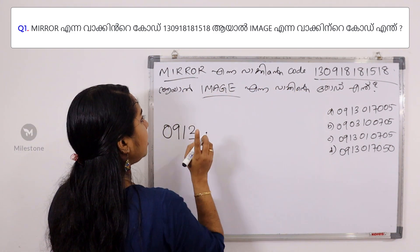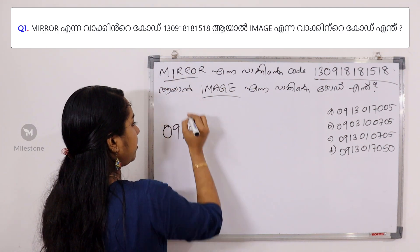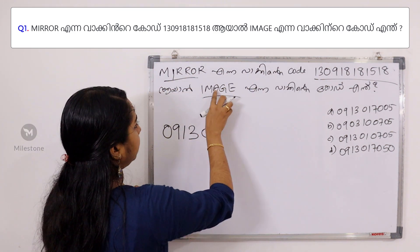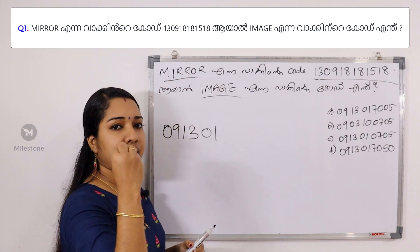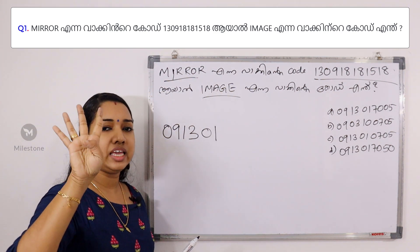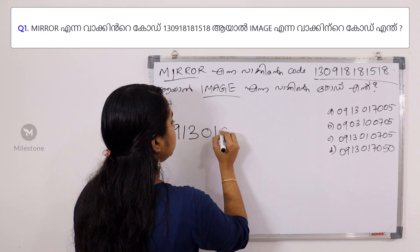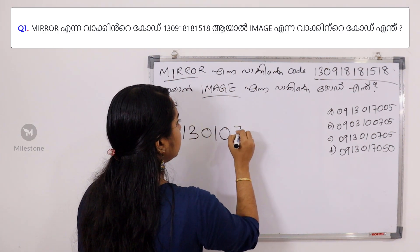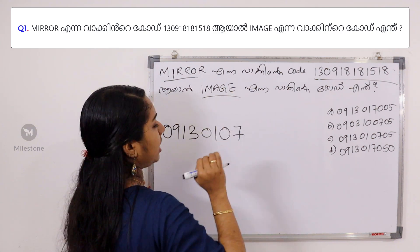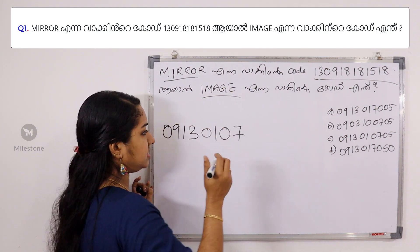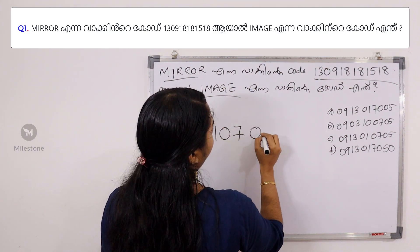A is equal to 1, so A = 0, 1. Now for G: A, B, C, D, E, F, G — that is 0, 7. For E: A, B, C, D, E — that is 5, so E = 0, 5.